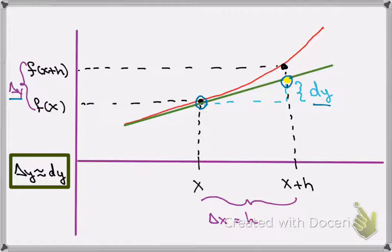So we can see that delta y is approximately equal to dy. So if I could find a way to calculate dy, I could use that as an approximation for delta y, and that's the whole point of our idea of differentials.